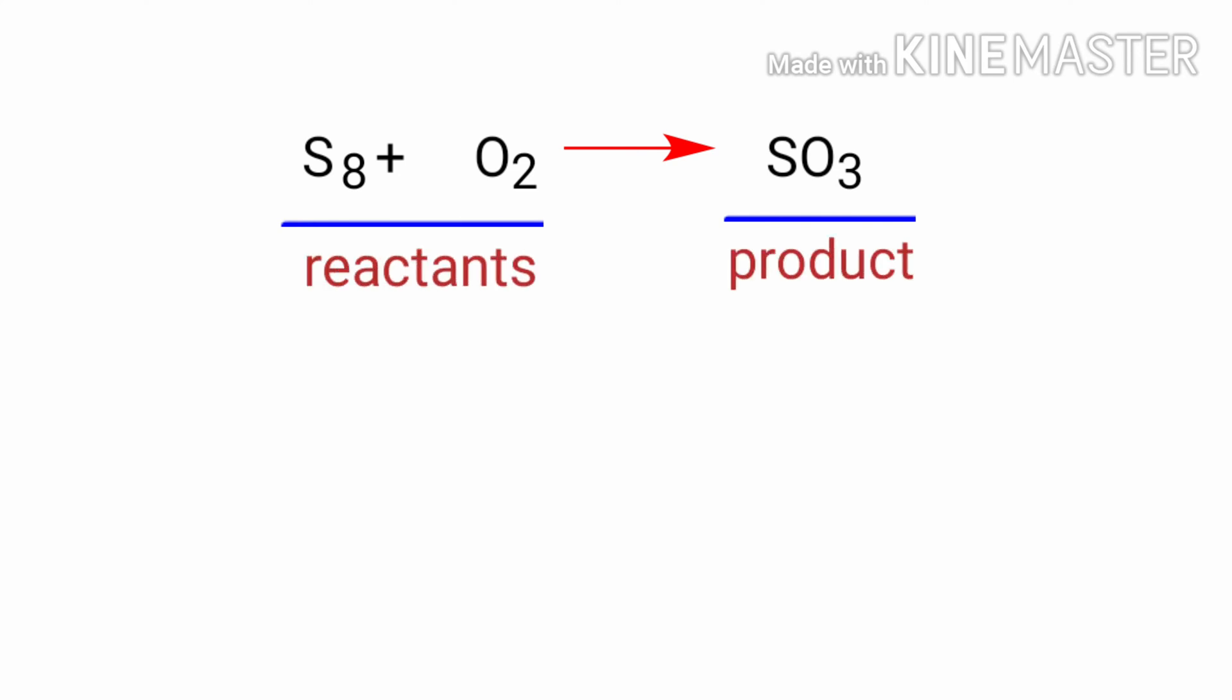In this equation, the reactants are octasulphur and oxygen and the product is sulphur trioxide. If you look at this equation, the equation is not balanced.